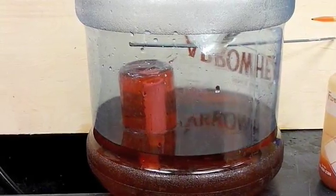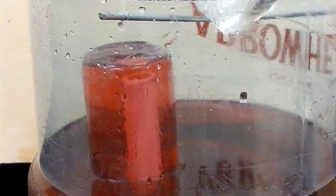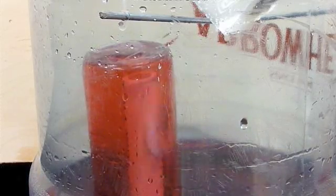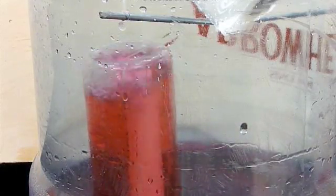The siphon drains the reservoir as normal until the water level reaches the bottom of the bell pipe. Air then enters and breaks the siphon as you see here, effectively solving the first failure mode.